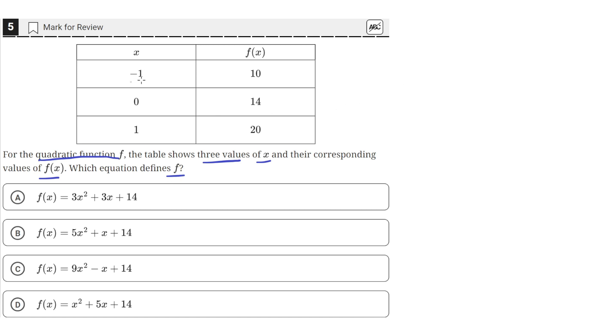We can see that at an x value of negative 1, f(x) equals 10. So the correct equation here, when we plug in negative 1 for x, should give us a value of 10 for f(x).